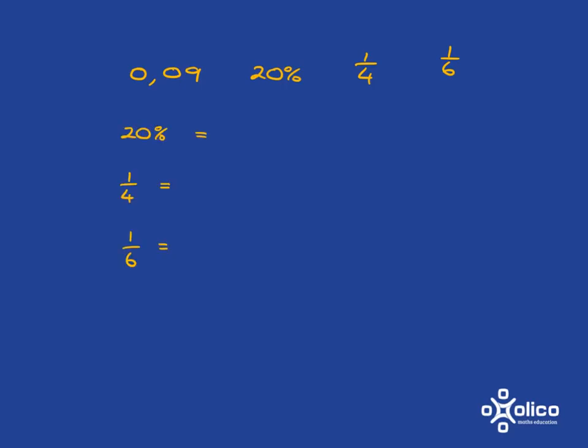So, 20% is just 20 over 100, and we know how to do 20 divided by 100. We just move the decimal over, and we get 0.20, which is just 0.2.